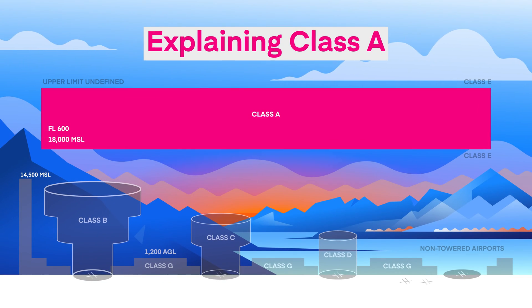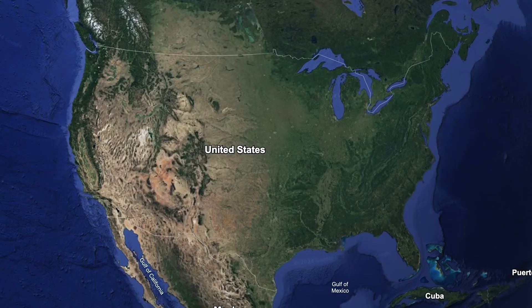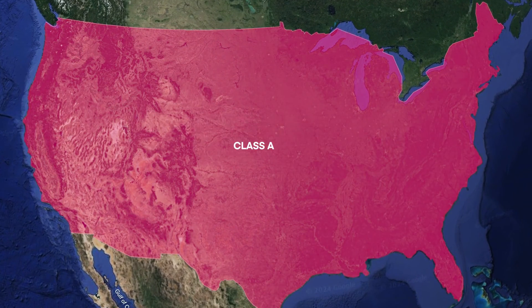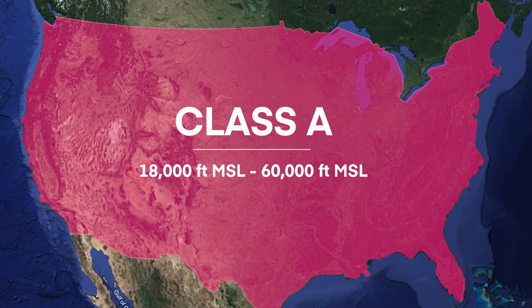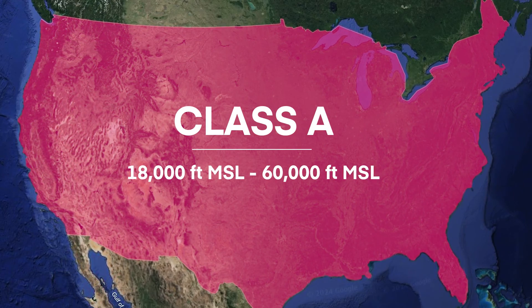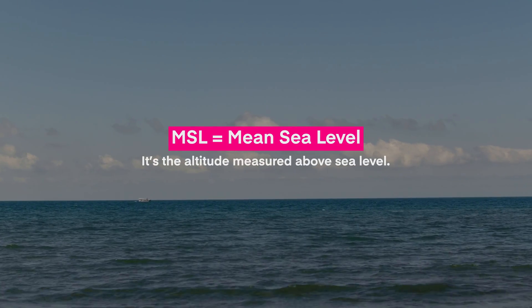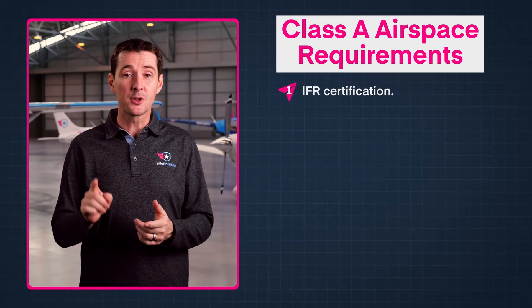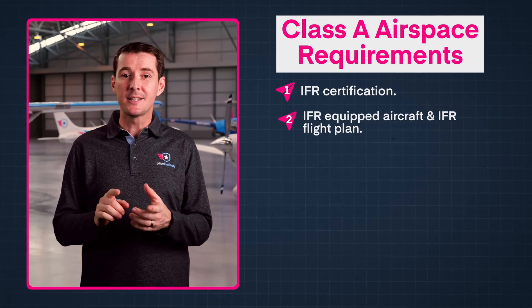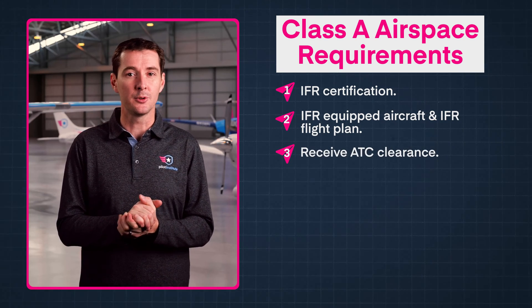Now let's explain controlled airspace first, starting with Class A, also called Class Alpha. It extends across the entire United States. It starts at 18,000 feet MSL and goes up to 60,000 feet MSL. MSL stands for mean sea level, because it is the altitude measured above sea level. It's not depicted on any charts because it covers the entire country. It's also IFR only, meaning you must be on an instrument flight plan and cleared by ATC in order to enter.